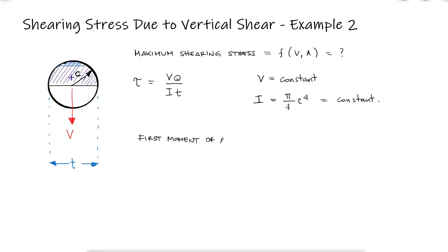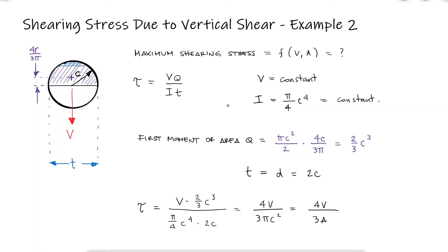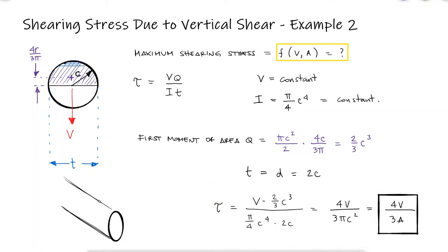The value for the first moment of area Q would be the area of a semicircle times the distance from the neutral axis to the centroid of a semicircle, which we can easily look up online, and the T dimension would be a diameter. Substituting these values in the shearing stress equation and identifying that pi c squared is the area of the circle, we find the expression for the maximum shearing stress.